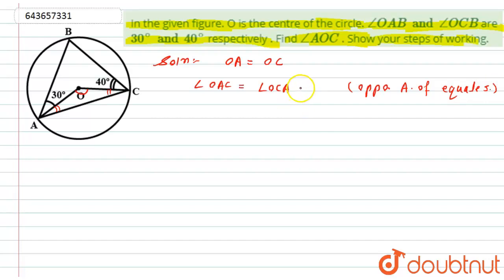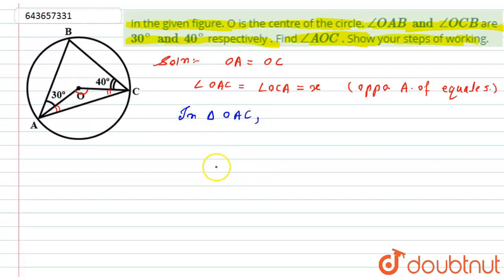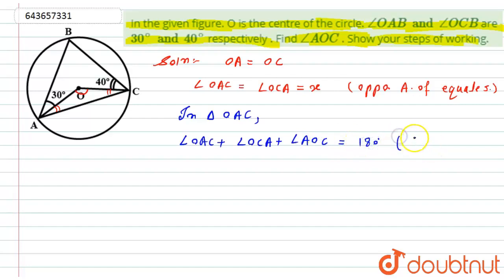Let angle OAC = angle OCA = x. Now, in triangle OAC, by the angle sum property, angle OAC plus angle OCA plus angle AOC equals 180 degrees.